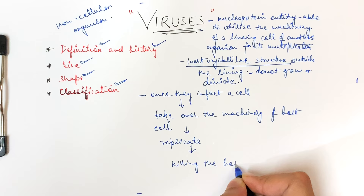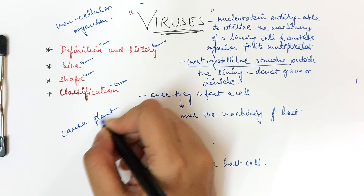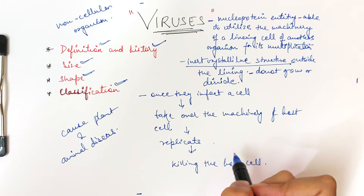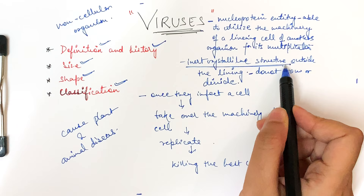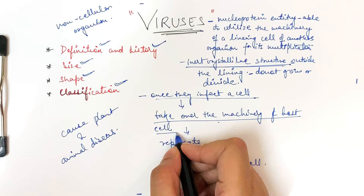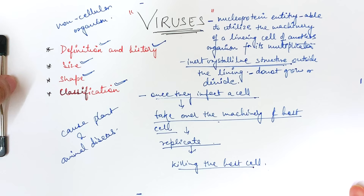This replication results in killing the host, which is why viruses are involved in various plant and animal diseases. So viruses are an entity with an inert crystalline structure outside the host cell, but once they enter a host cell they become active, take over the host machinery to replicate, and kill the host cell.